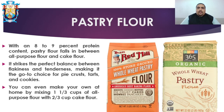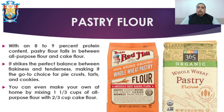Next is pastry flour, which has around eight to nine percent protein content. Pastry flour falls in between all-purpose flour and cake flour. It strikes the perfect balance between flakiness and tenderness, making it the go-to choice for pie crusts, tarts, and cookies. You can make your own at home by mixing one-third cup of all-purpose flour with two-thirds cup of cake flour — giving you both the tenderness of cake flour and the strength of all-purpose flour.